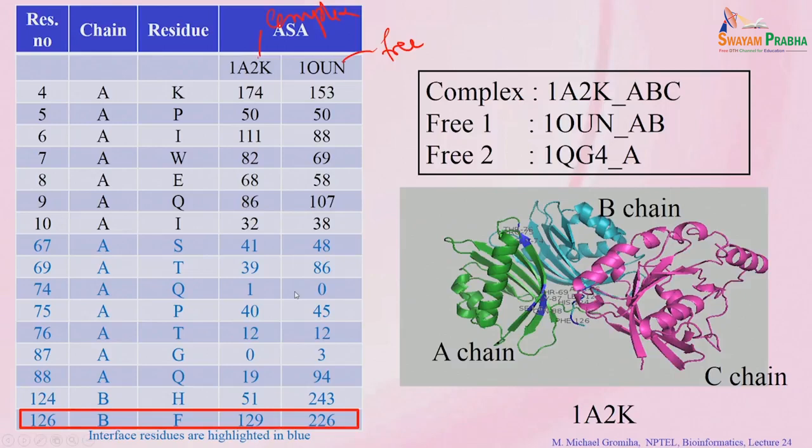So we discussed two different approaches for identifying binding sites. The first is distance-based criteria: based on a distance cutoff, residues within that limit are identified as binding site residues. The second is ASA-based criteria: based on the change in accessible surface area between the unbound form and the complex form — residues showing a reduction in ASA are identified as binding site residues.